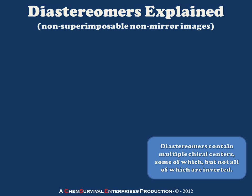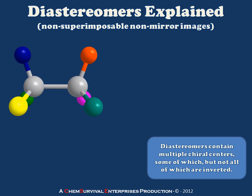Another type of stereoisomer you're likely to hear about in your chemistry course is diastereomers. Diastereomers are defined as non-superimposable, non-mirror images which have all the same bond connectivity. In order for this to occur, there must be at least two chiral centers within the molecule. Here again is our molecule with two chiral centers shown in gray: one with blue, green, and yellow substituents, and one with orange, teal, and magenta substituents.